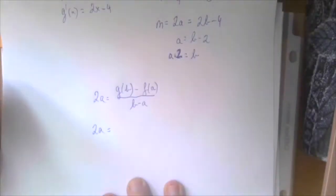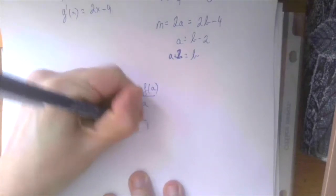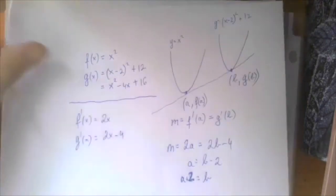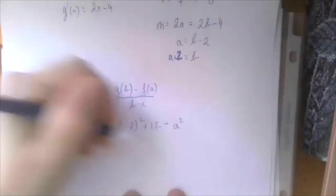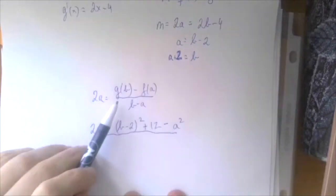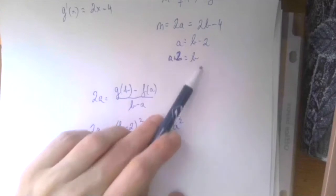So 2a should be the same. g of B is B minus 2 squared plus 12. We just substitute B into that, minus f of A, that's just A squared, divided by B minus A, which should be 2. If we go back to here, B minus A is 2.